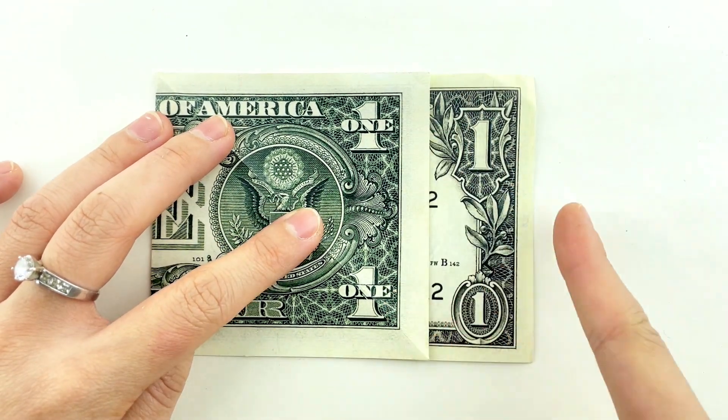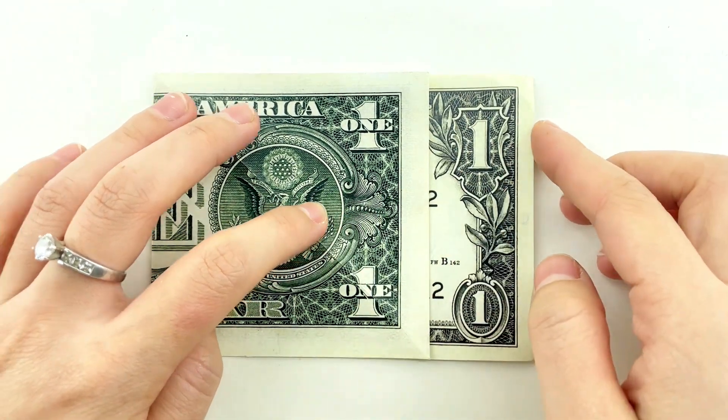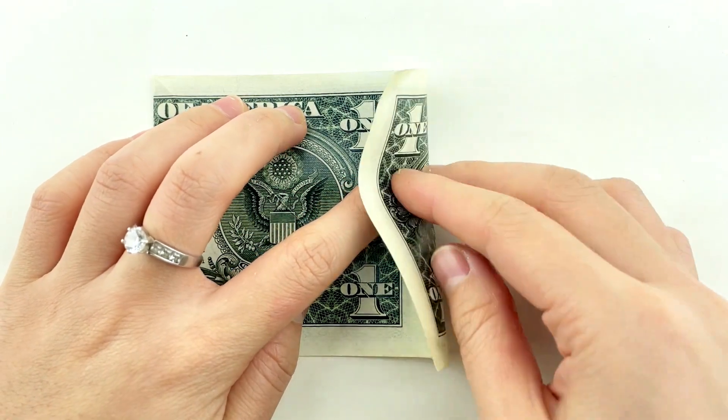Ah, now for a neat trick! Valley fold the excess right edge inside, keeping everything sleek and tidy.